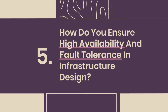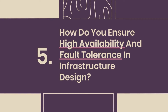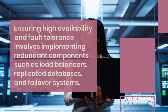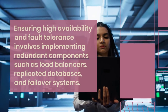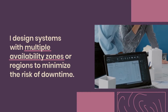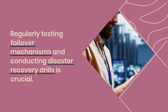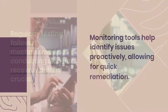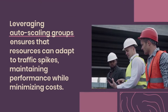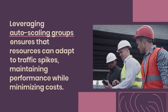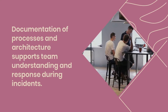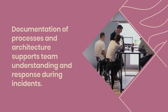Question 5: How do you ensure high availability and fault tolerance in infrastructure design? Ensuring high availability and fault tolerance involves implementing redundant components such as load balancers, replicated databases, and failover systems. I design systems with multiple availability zones or regions to minimize the risk of downtime. Regularly testing failover mechanisms and conducting disaster recovery drills is crucial. Monitoring tools help identify issues proactively, allowing for quick remediation. Leveraging auto-scaling groups ensures that resources can adapt to traffic spikes, maintaining performance while minimizing costs. Documentation of processes and architecture supports team understanding and response during incidents.